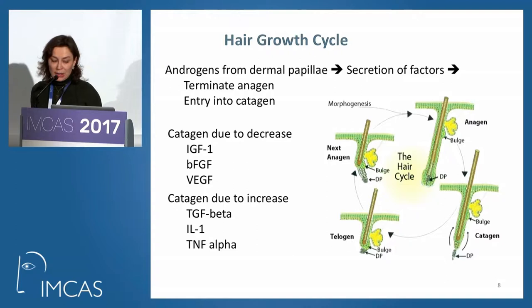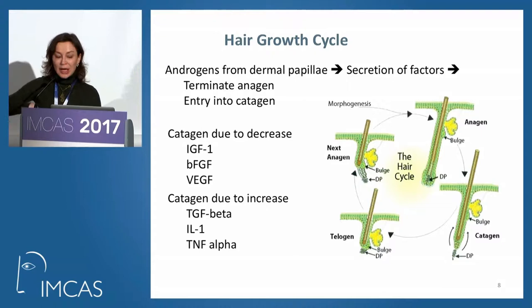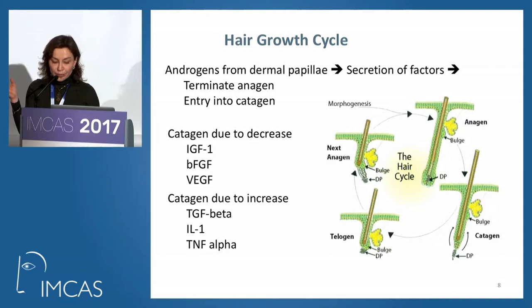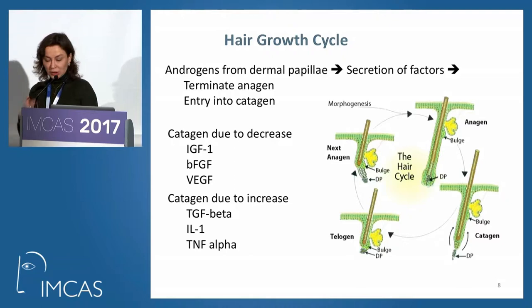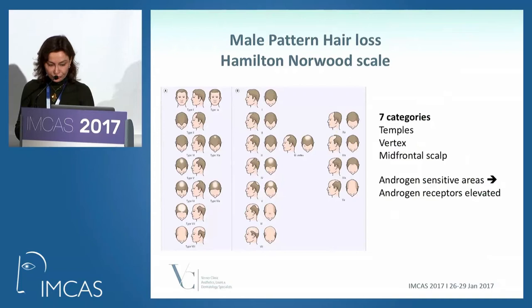Growth factors important for continuing anagen include insulin-like growth factor 1 (IGF-1), basic fibroblast growth factors, other FGFs, and vascular endothelial growth factor (VEGF) — when these decrease, the hair enters catagen. Conversely, when TGF-β, interleukin-1, and TNF-α increase, there is entry into catagen. It is essentially an equilibrium of these growth factors.